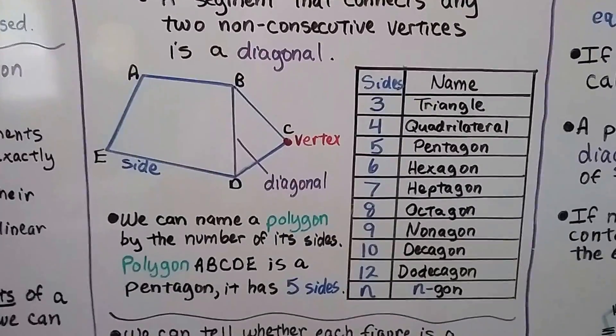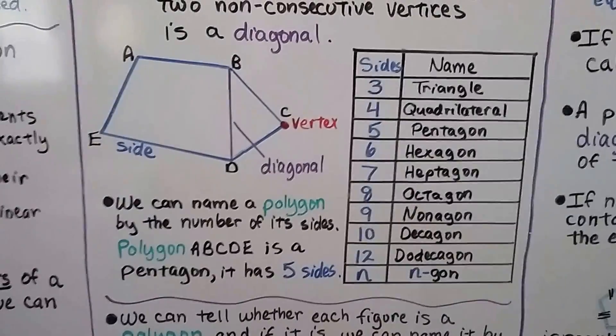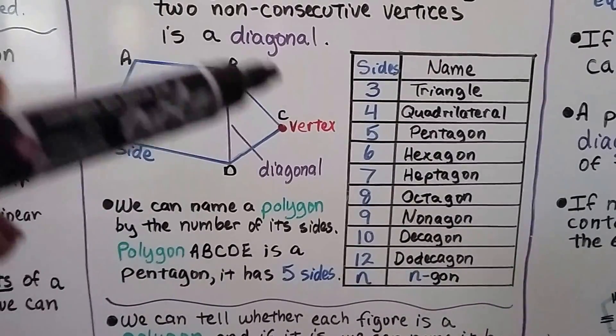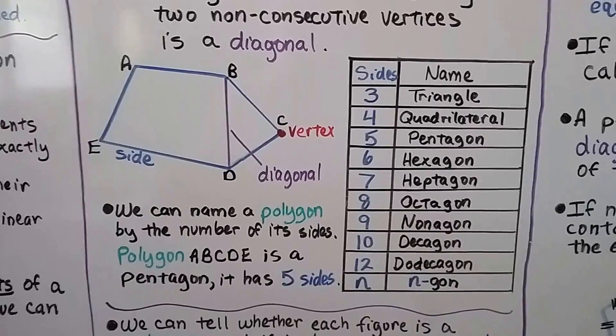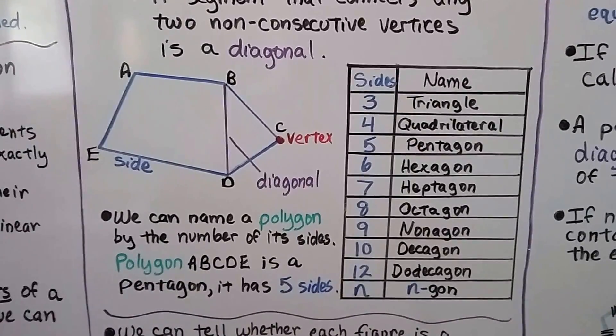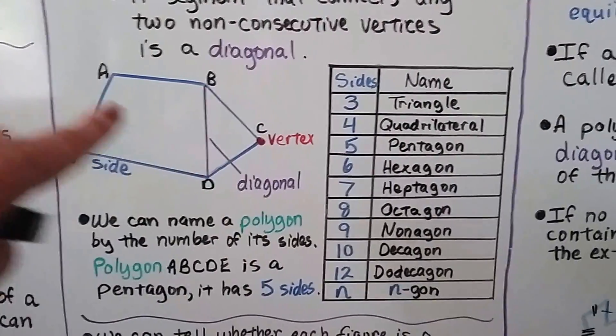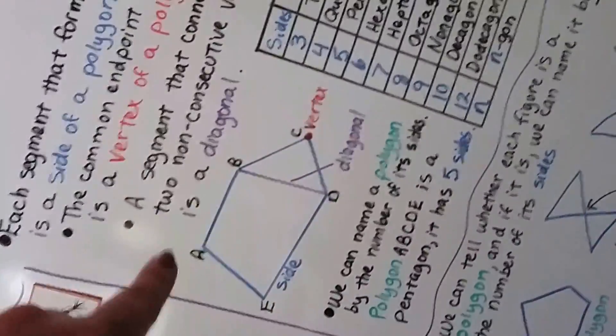We can name a polygon by the number of its sides. Polygon ABCDE is a pentagon. It has five sides. If we ignored this diagonal, it would be like the sideways shape of a house. That's a pentagon.